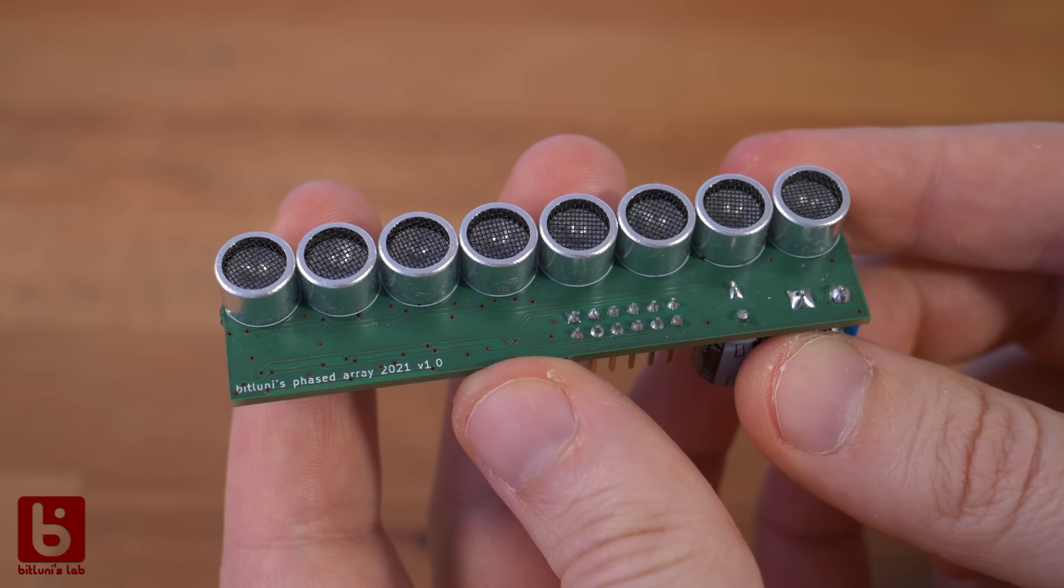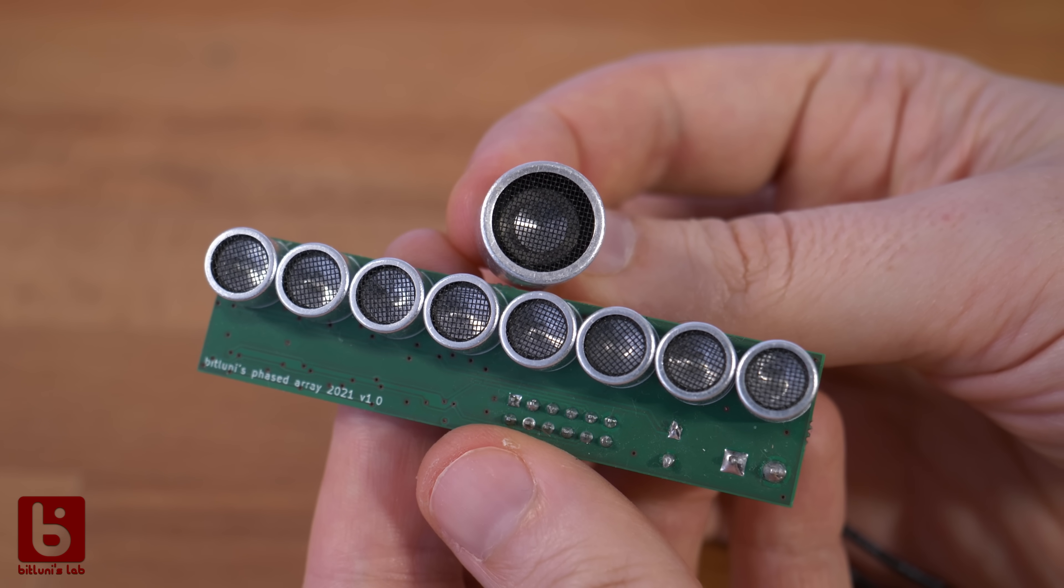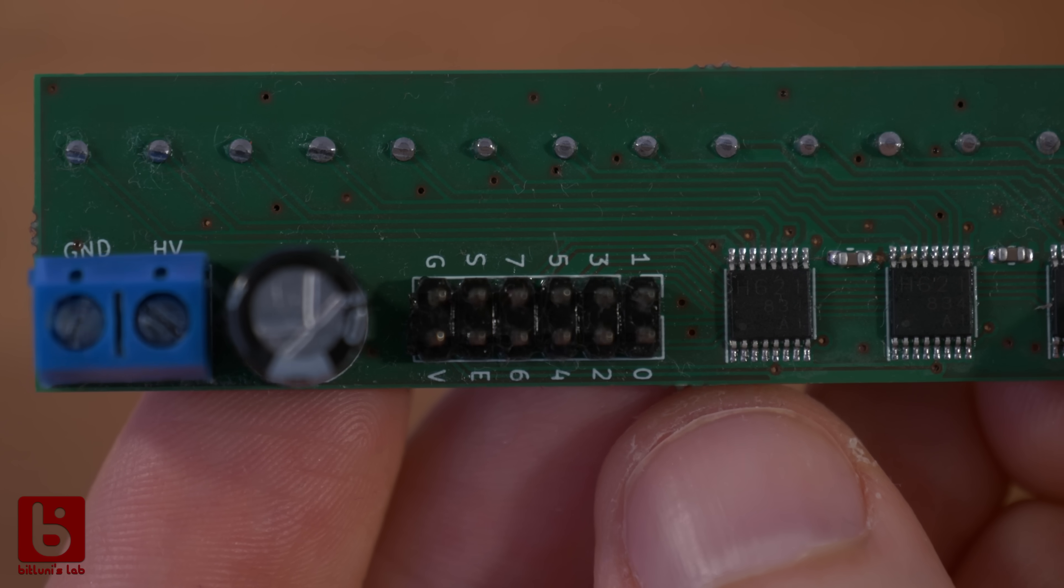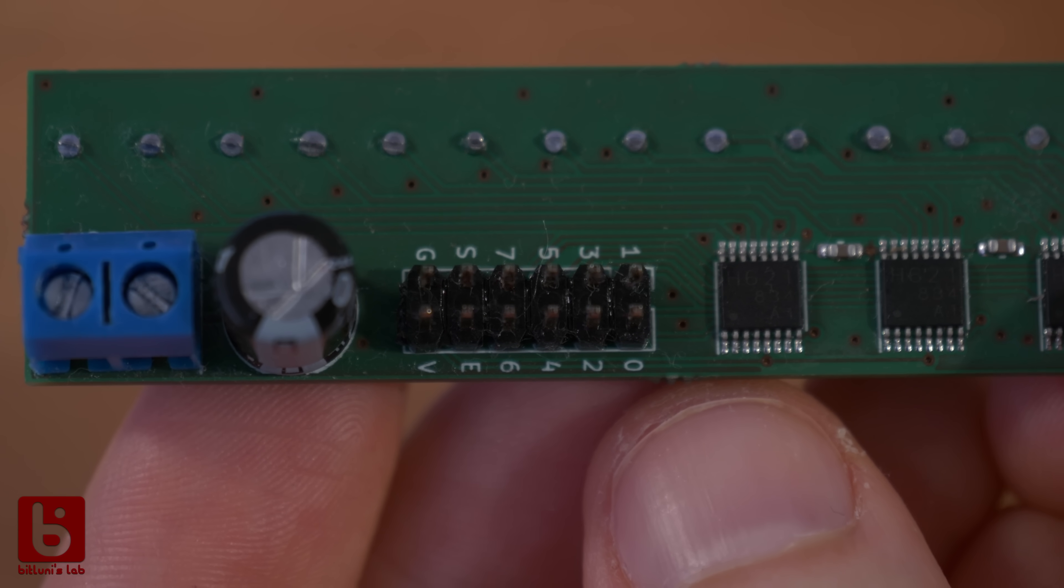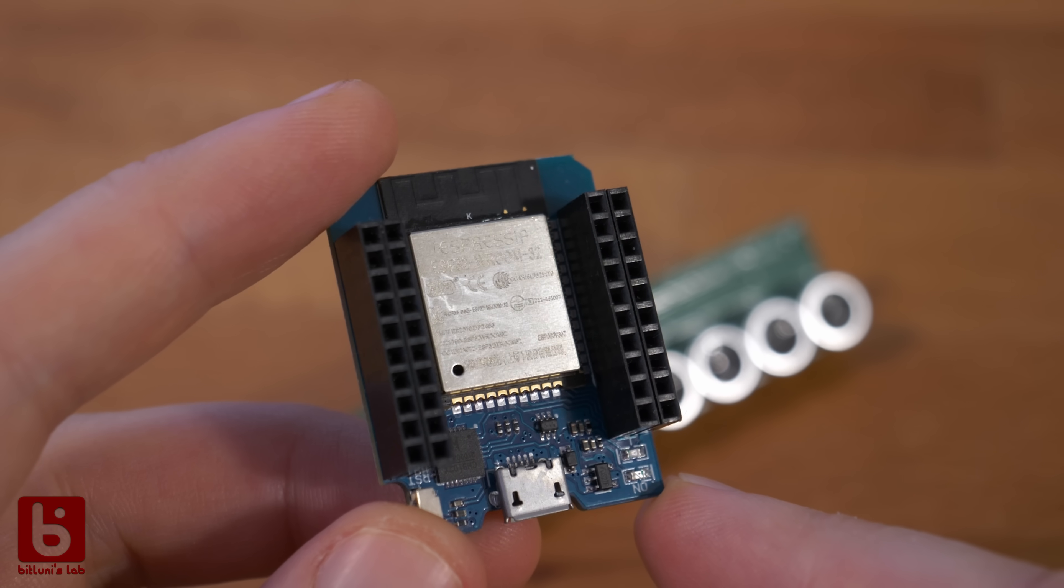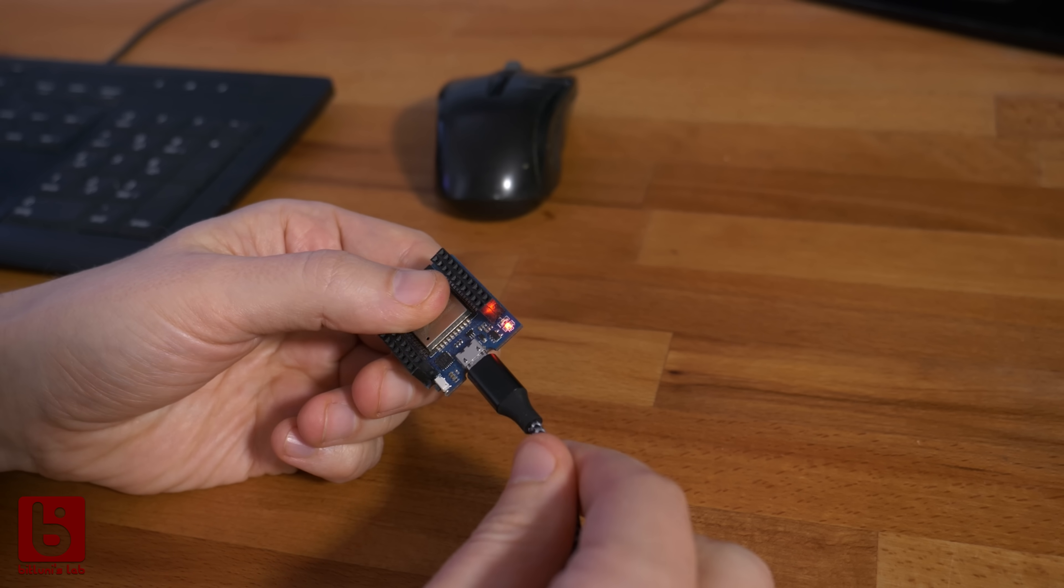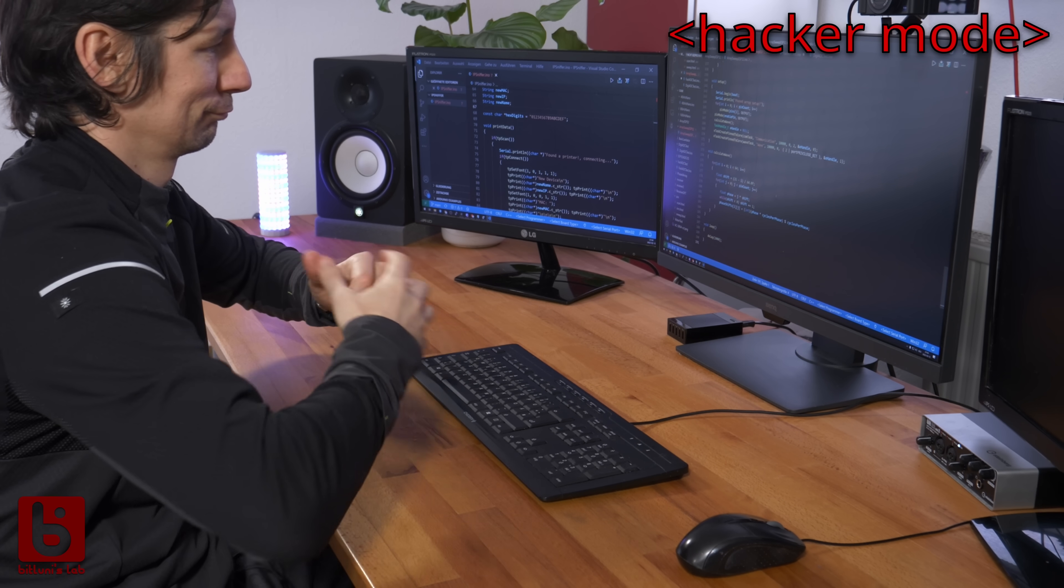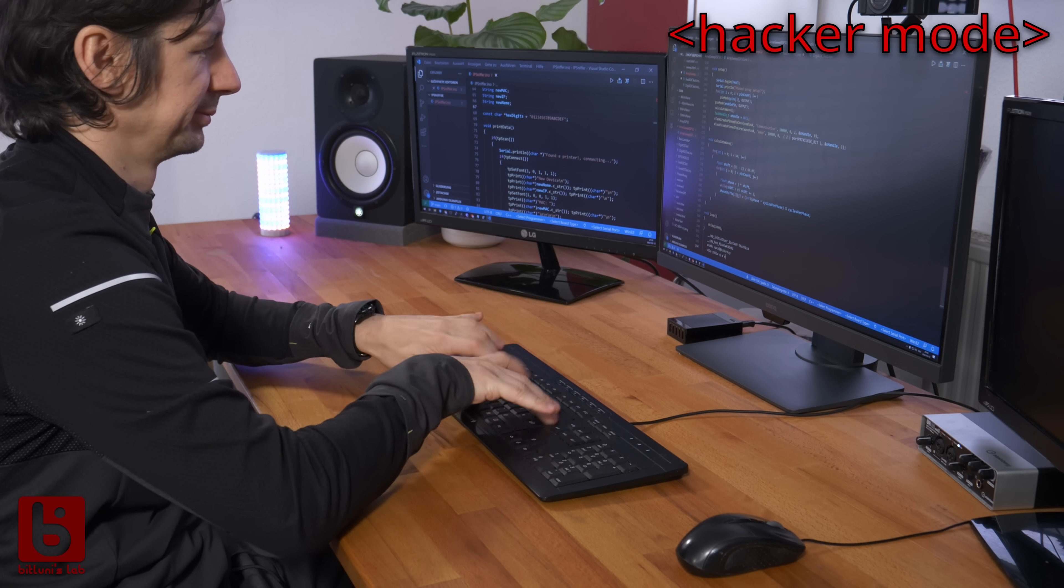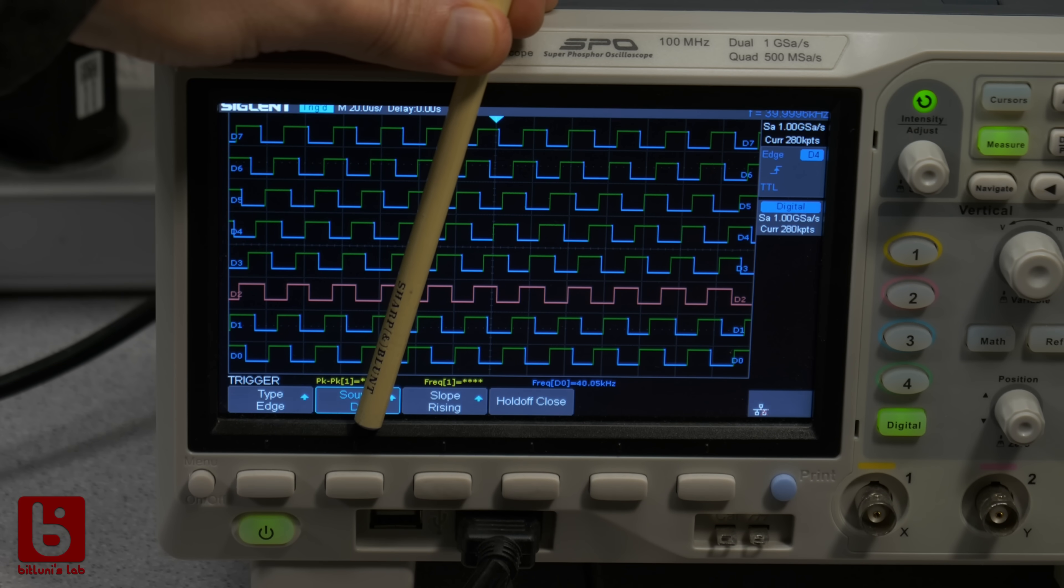Doesn't it look cool? The board is only populated with transmitters. I will use a single receiver to detect the echoes. It can be driven by 15V, but it still needs the 40kHz signal to each transducer to control the phase individually. I decided to use an ESP32 microcontroller to do that. A little bit of code later, you can see the 8 waveforms and a nice phase shift.